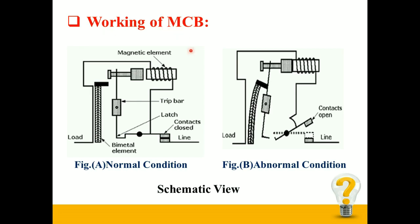Working of MCB. The schematic view of MCB is shown in the figure above. The image on the left-hand side shows the working of MCB during normal conditions, and the image on the right-hand side shows the working during abnormal conditions. There are two abnormal conditions against which MCB provides protection: first is the overload condition, and second is the short circuit condition. During the overload condition, a current more than the rated current flows through the MCB.